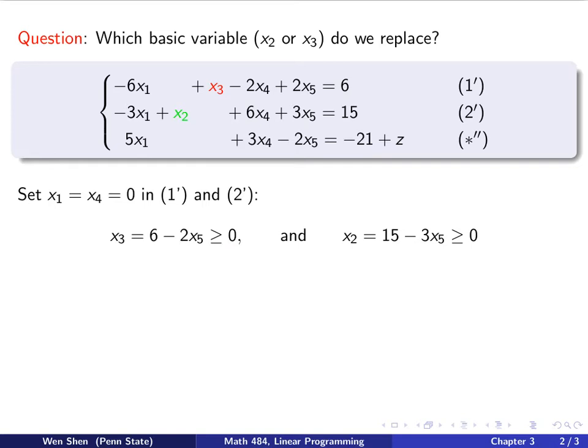And we do the same thing to the second constraint. We have x2 plus 3x5 is 15, and we can write x2 is 15 minus 3x5. And also, this has to be bigger than or equal to 0. So basically we obtained these two constraints on x5. Let's clean up a bit.